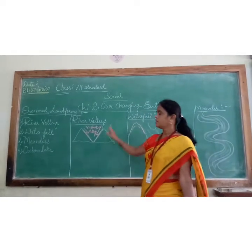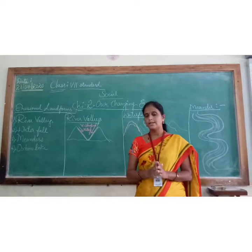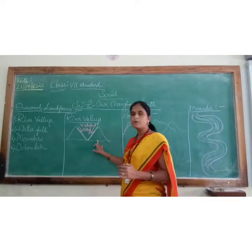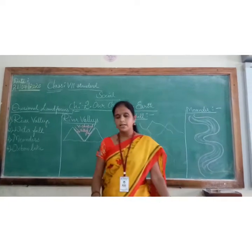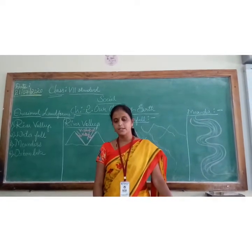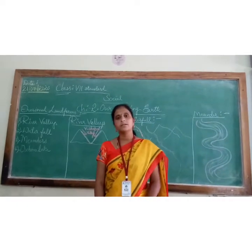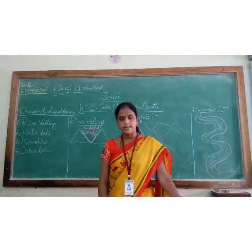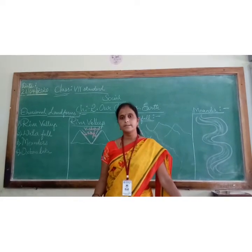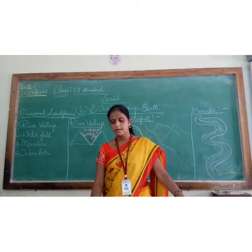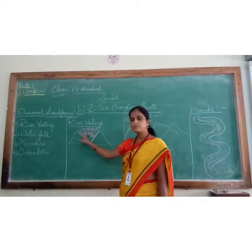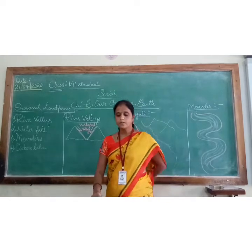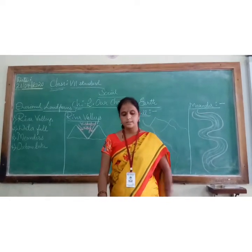Let us start with the river valley. A valley is a shaped place formed between two mountains. River valleys are the most significant erosion landforms carved out by rivers due to flowing water. These are formed in mountainous regions as a result of vertical erosion by rivers. Where water flows continuously in mountainous terrain, erosion activity creates valleys with steep slopes.